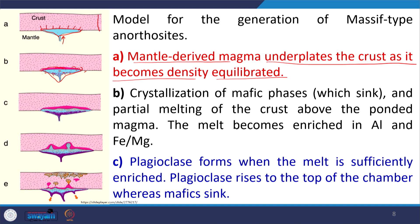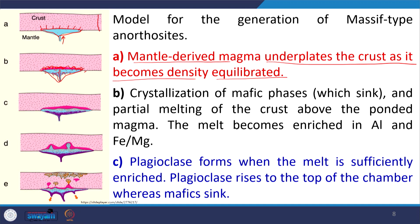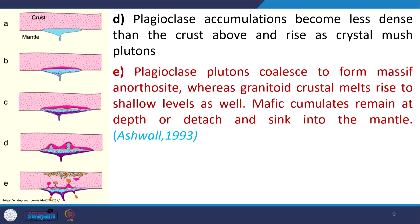Crystallization of the mafic phase causes sinking, while partial melting of the crust above the ponded magma makes the melt become enriched in aluminum and Fe-Mg. The mafic minerals crystallizing settle down, so the magma automatically enriches in felsic content — in Si and Al. Once the Si and Al content increases, plagioclase forms when the melt is sufficiently enriched. Plagioclase rises to the top of the chamber while the mafic minerals sink, creating a clear separation between the two layers.